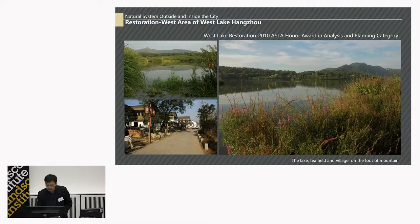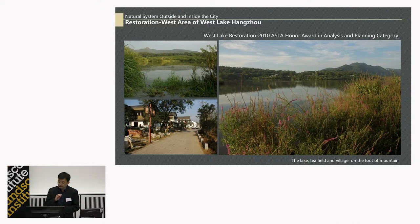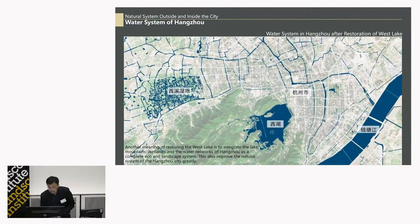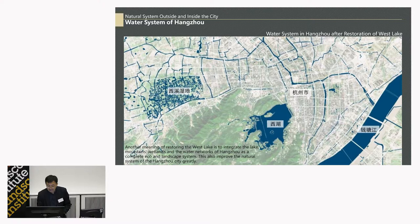You can see the picture after the project is finished. At the foot of the mountains, lakes, agriculture — the tea fields and villages — all compose together again, just as in the historical period. Another meaning of restoring the West Lake is to integrate the lake, mountains, the water network, the wetland, and all the natural elements here to compose a complete whole system. This greatly improves the natural system of Hangzhou city.